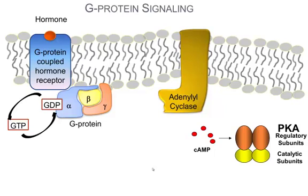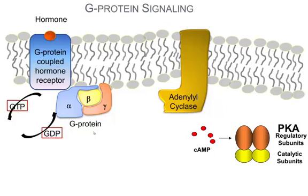G-proteins have three subunits: an alpha subunit, a beta subunit, and a gamma subunit. When the G-protein is in an inactive state, the alpha subunit has a bound guanosine diphosphate, or GDP. The binding of the hormone to the G-protein coupled receptor initiates a conformational change in the G-protein, stimulating the alpha subunit to exchange its bound GDP for GTP. With GTP bound, the G-protein is in an active state, and the activated G-protein dissociates into the alpha subunit and a beta-gamma complex.